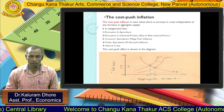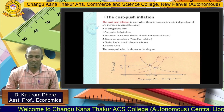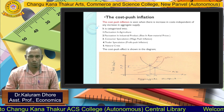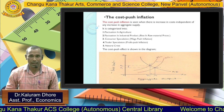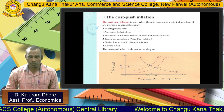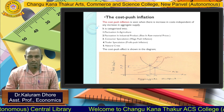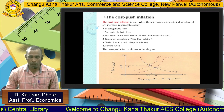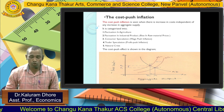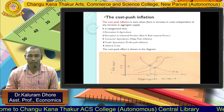In this diagram, there are two aggregate supply curves — Aggregate Supply 1 and Aggregate Supply 2 — and one Aggregate Demand curve, which slopes downward from left to right. We see that Aggregate Supply curve 1 shifts to become Aggregate Supply curve 2.